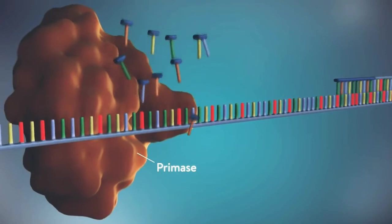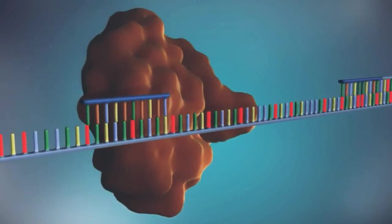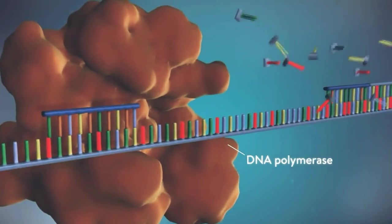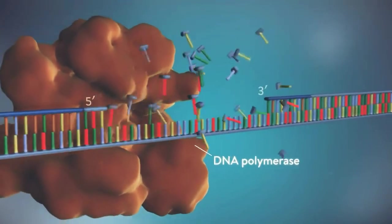The next primer is then added further down the lagging strand. Another Okazaki fragment is then made and the process is repeated.